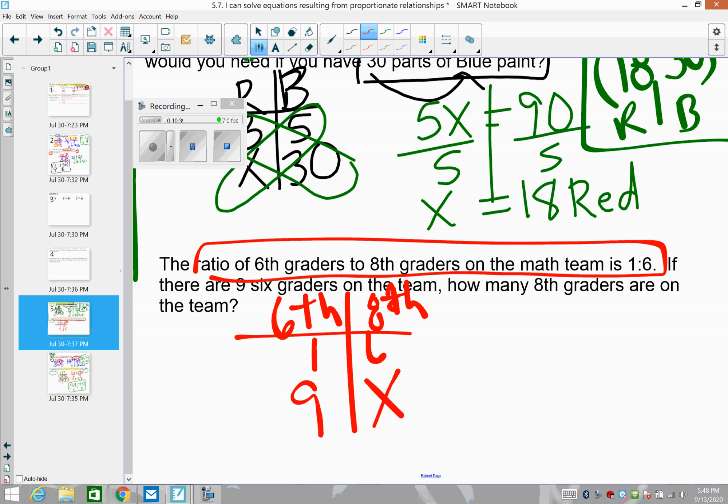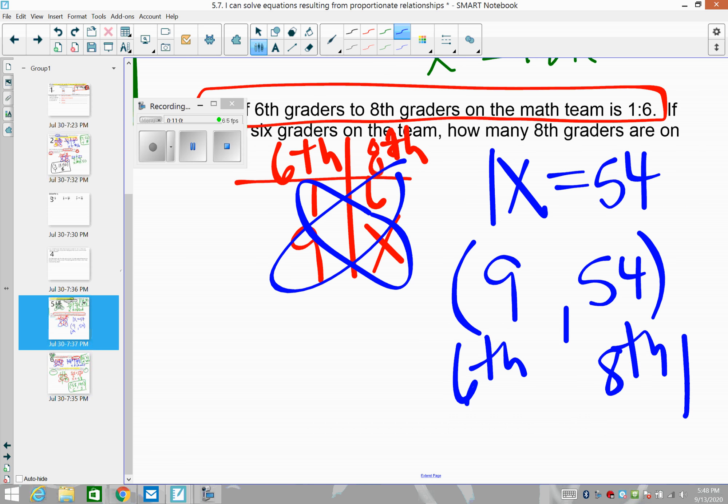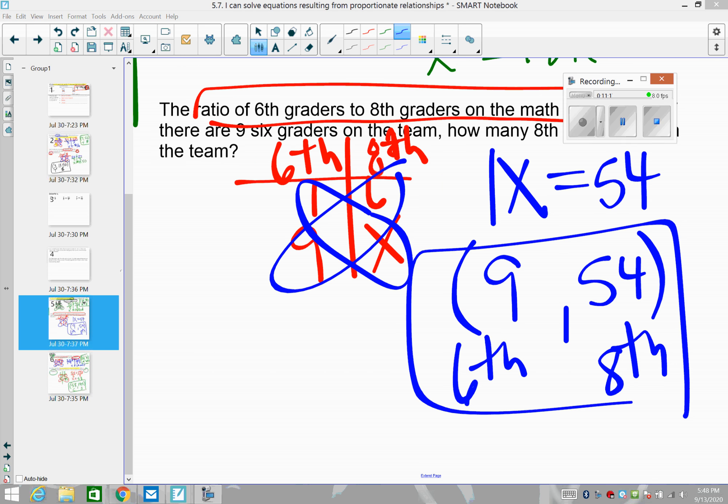If there are nine sixth graders on the math team, how many eighth graders are on the team? You can see in this one, I'm multiplying down the table by nine. If you didn't notice that, that's okay. So we get one X equals 54, not much to solve here. I could divide by one, but that's a waste of time. So we are saying that we have 54 eighth graders. We are saying that we have nine sixth graders to 54 eighth graders on the math team. So that would be the relationship that we have on the math team.